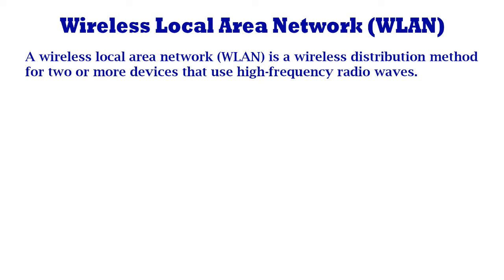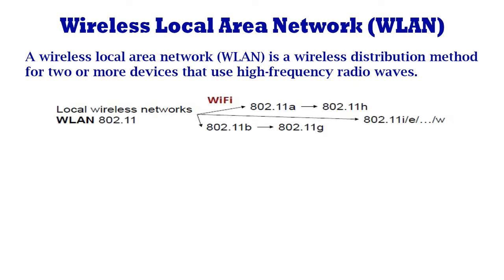A Wireless Local Area Network, i.e. WLAN, is a wireless distribution method for two or more devices that use high frequency radio waves and often include an access point to the internet. A WLAN allows users to move around the coverage area, often a home or small office, while maintaining a network connection. A WLAN is sometimes called a Local Area Wireless Network, i.e. LAWN. The figure shows the idea about local wireless networks.